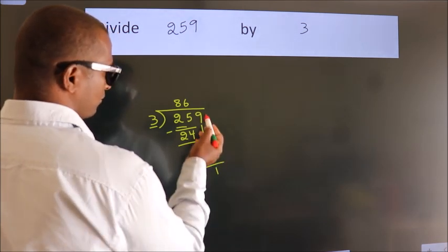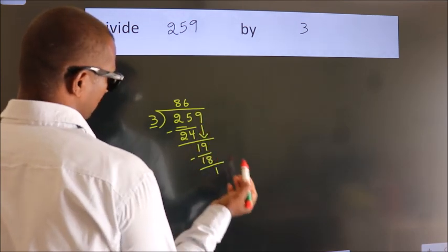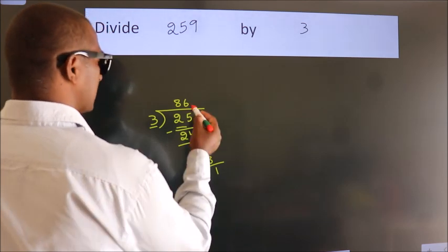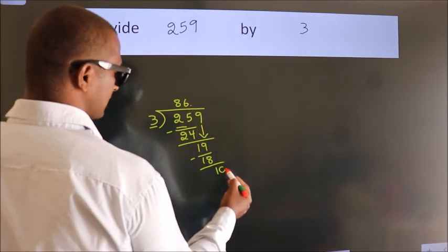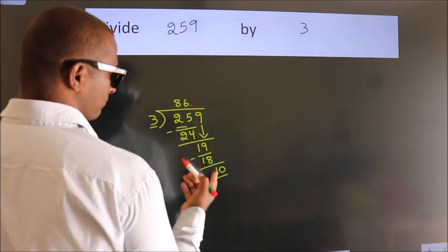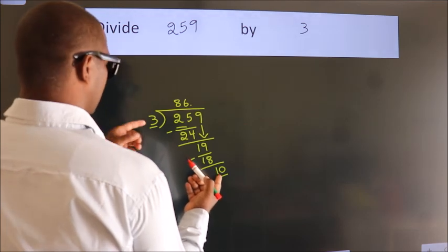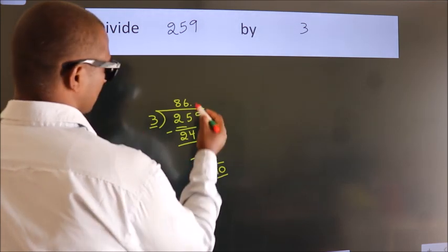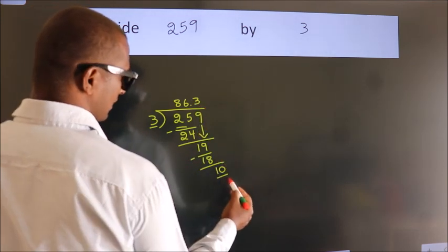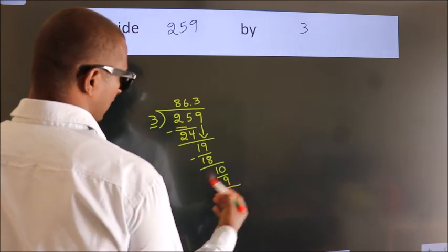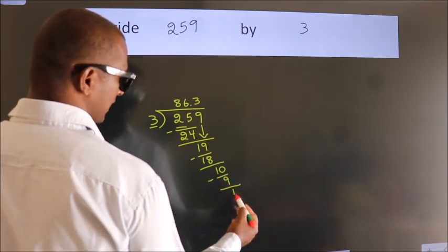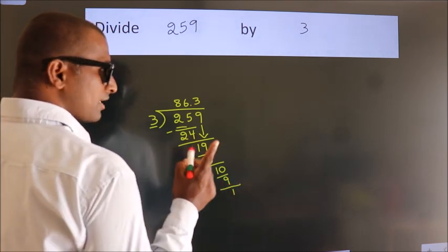After this, no more numbers to bring down. So what we do is, we put a dot and take 0. So, 10. A number close to 10 in the 3 table is 3 times 3, 9. Now we subtract. We get 1.